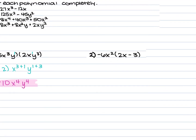For number 2, we have negative 6x² times (2x minus 3). When you have something outside parentheses, it gets distributed — multiplied by every term inside. So negative 6x² times 2x gives negative 12x³, and negative 6x² times negative 3 gives positive 18x². Remember, even though both terms have x, their powers are different, so you do not combine their coefficients.